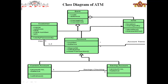You can see generalization and specialization here — account is the generalized class having two specialized classes: current account and saving account. Here you can see a diamond shape, which means ATM is a part of bank, and account is a part of bank — this is a part-of relationship, which we call aggregation. And the 'has' relationship between customer and account we call association. One customer can have one, two, three, or four accounts.